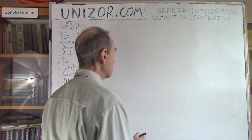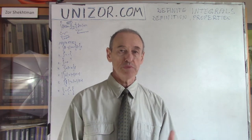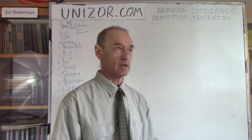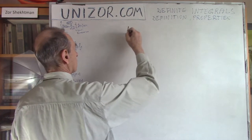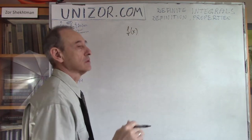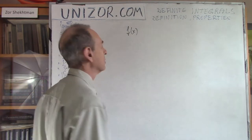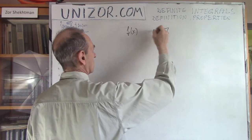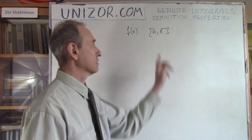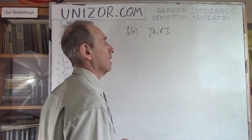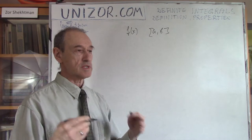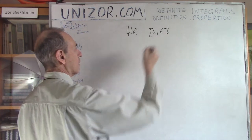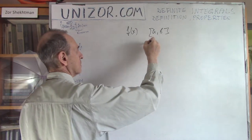We were dealing in all these previous problems with basically the same thing. If you have some kind of smooth, continuous, differentiable function defined on segment AB — and we are talking about real functions, so this is a real argument and real function — then we have introduced a process. On each step what we do, we divide our segment AB into different intervals.